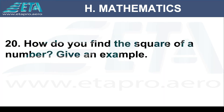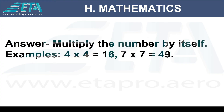How do you find the square of a number? Give an example. Multiply the number by itself. Example: 4 times 4 equals 16; 7 times 7 equals 49.